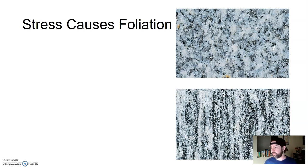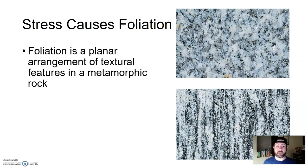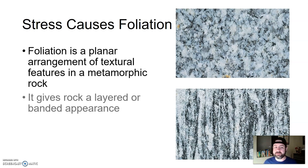The first thing is called foliation, caused by stress. Foliation is a planar arrangement of textural features in metamorphic rocks — a fancy way of saying it gives rocks a kind of layered or banded appearance.